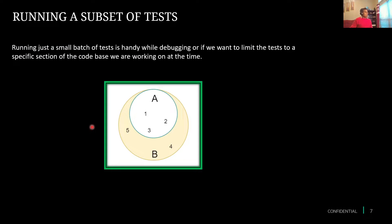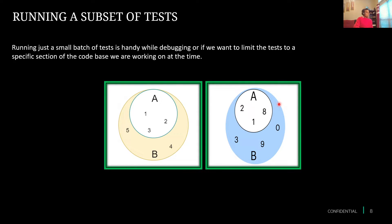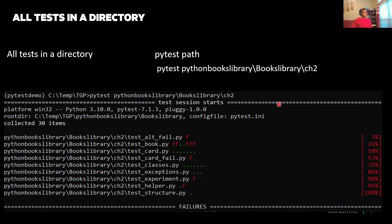Now let's change gears a little bit and talk about how we can do the selection. Once we are done with test development, while running the test cases we want to run only selective ones. Maybe out of five we want to run only one, two, or three, or maybe out of nine we want to run one, two, and eight. To do these kinds of selections we have to use any of the available mechanics.